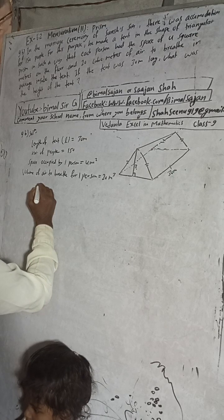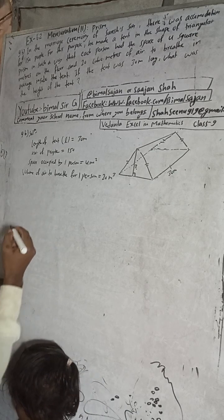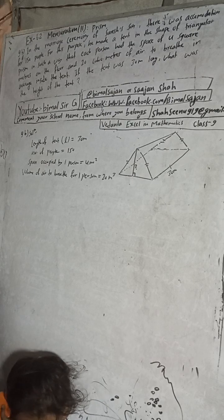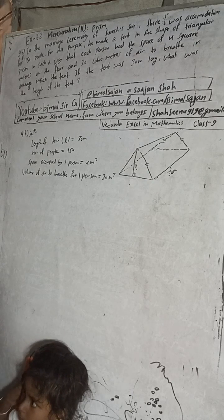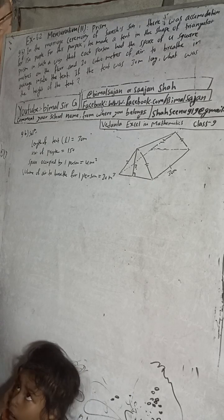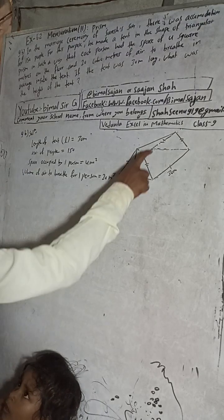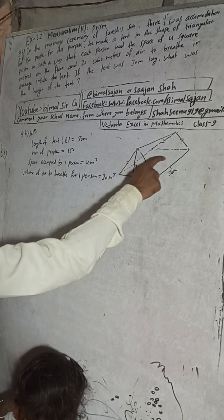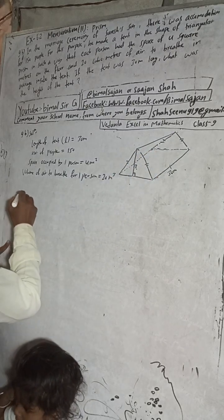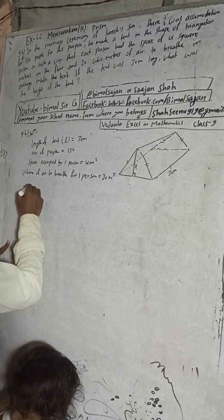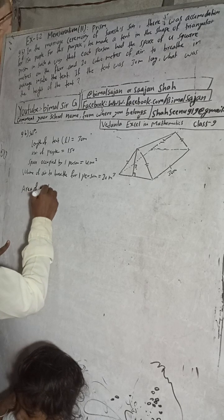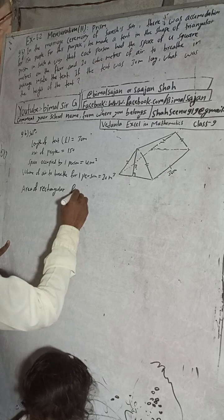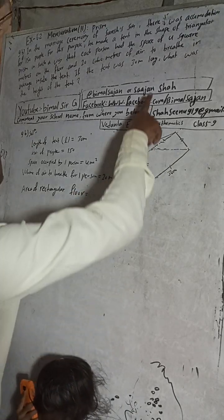Now we can find the area of rectangular floor. Area of rectangular floor is equal to how much? In the question that is given what?